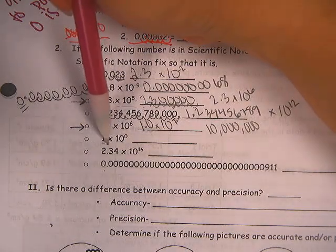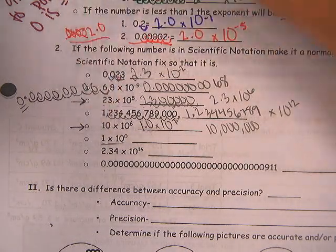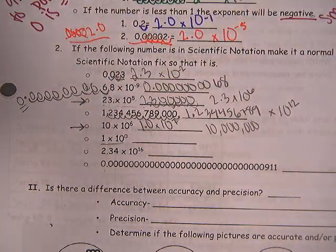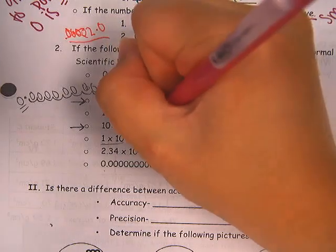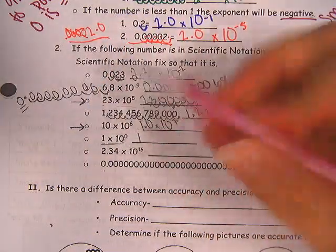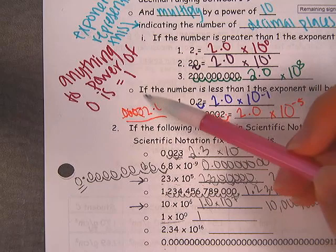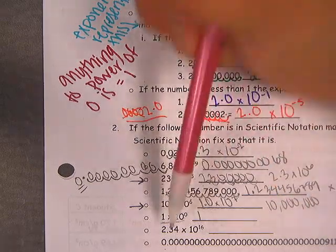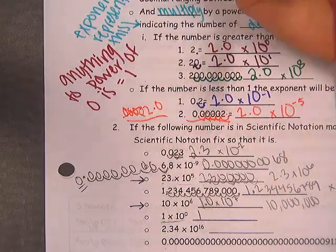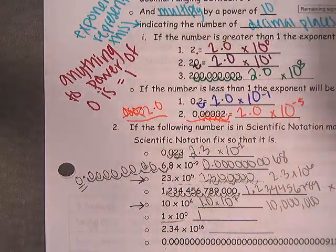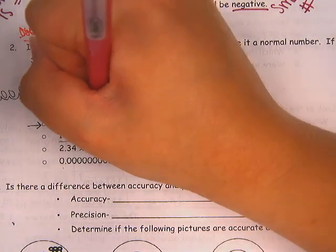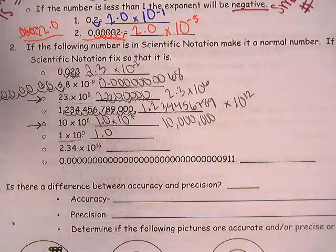This one is just a little tricky because it's an awkward way to look at the number. The answer is just 1. So 1 times 10 to the power of 0 — we remember that anything to the power of 0 is equal to 1, so it's basically 1 times 1, which equals 1. You could also write it as 1.0 if you really wanted to.